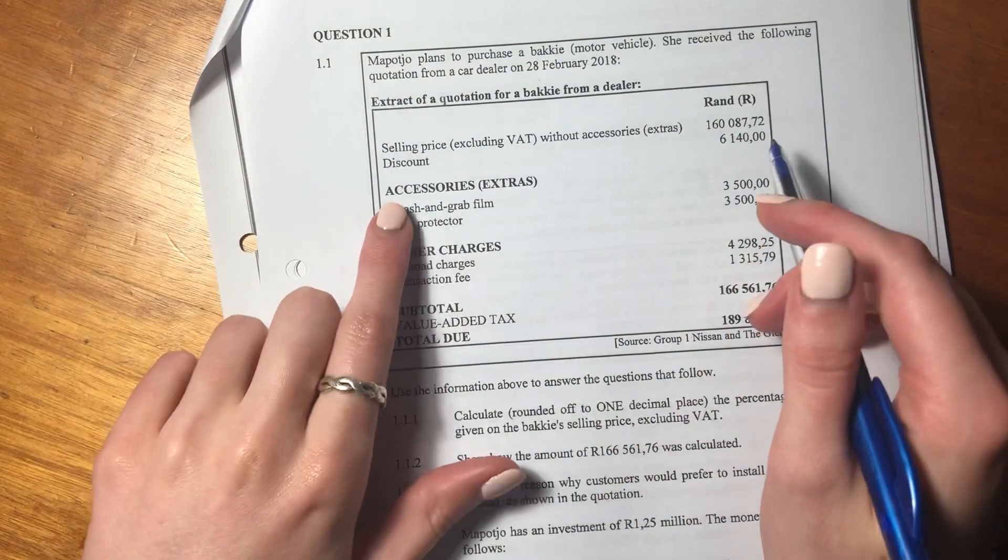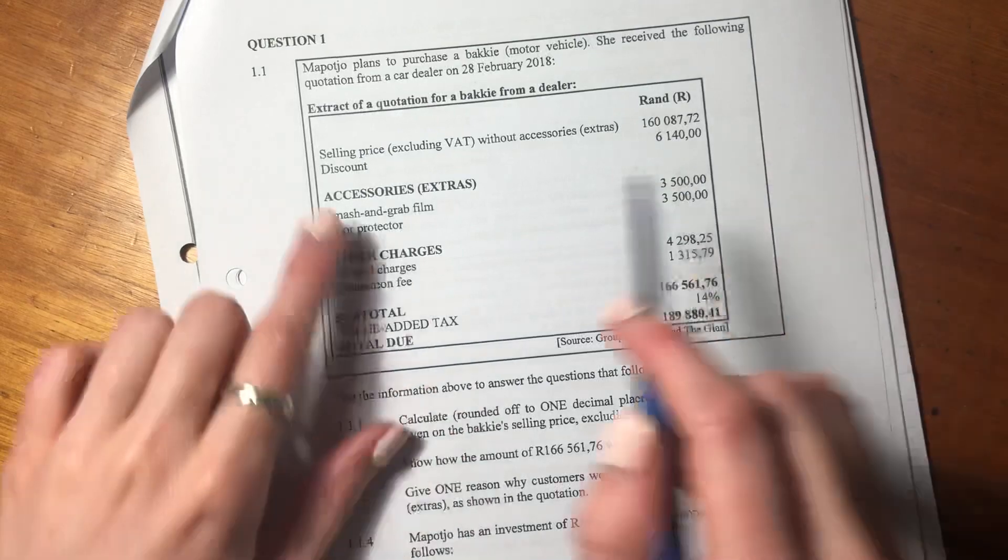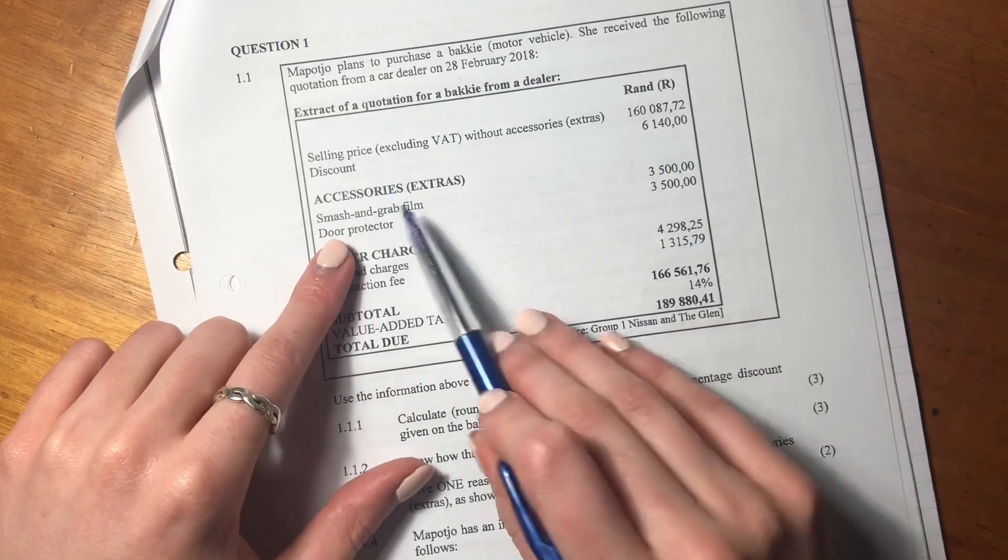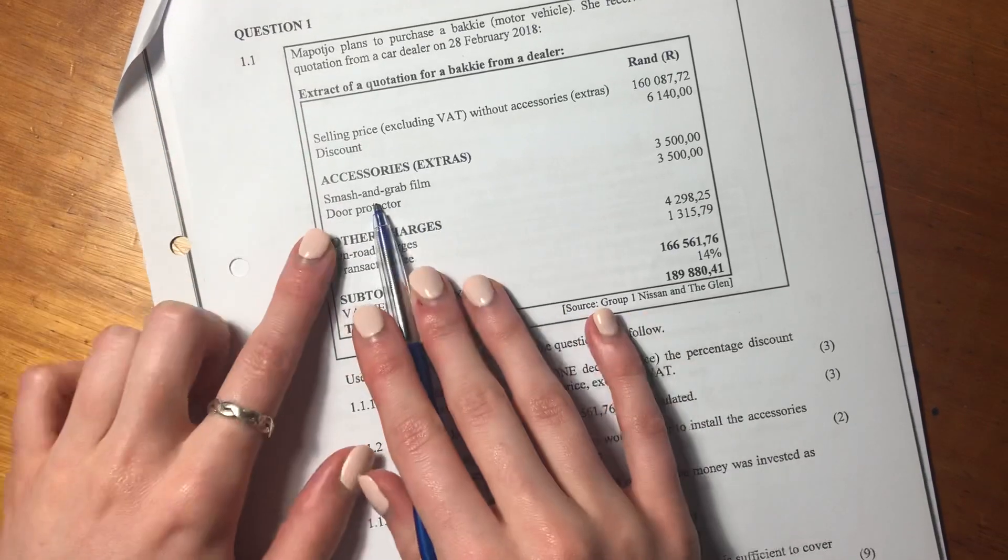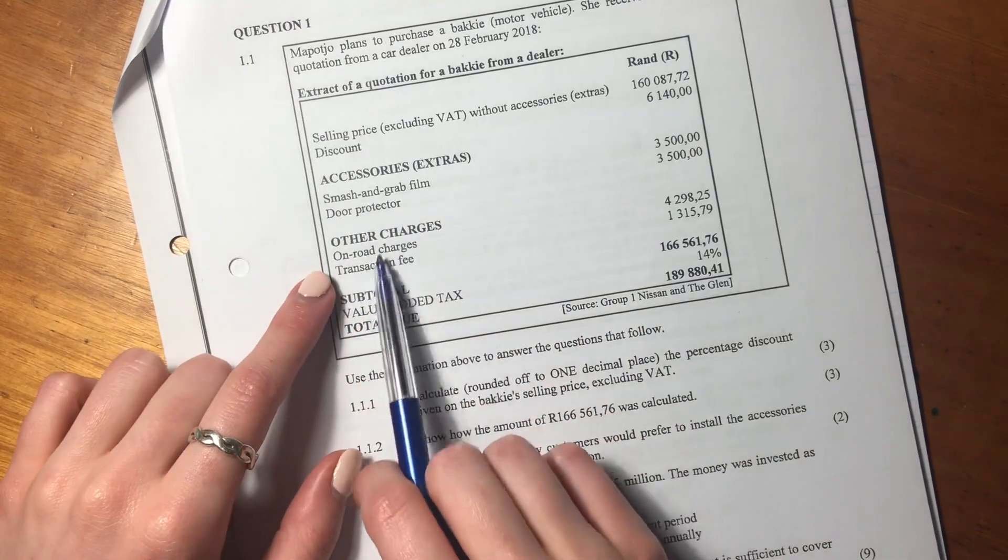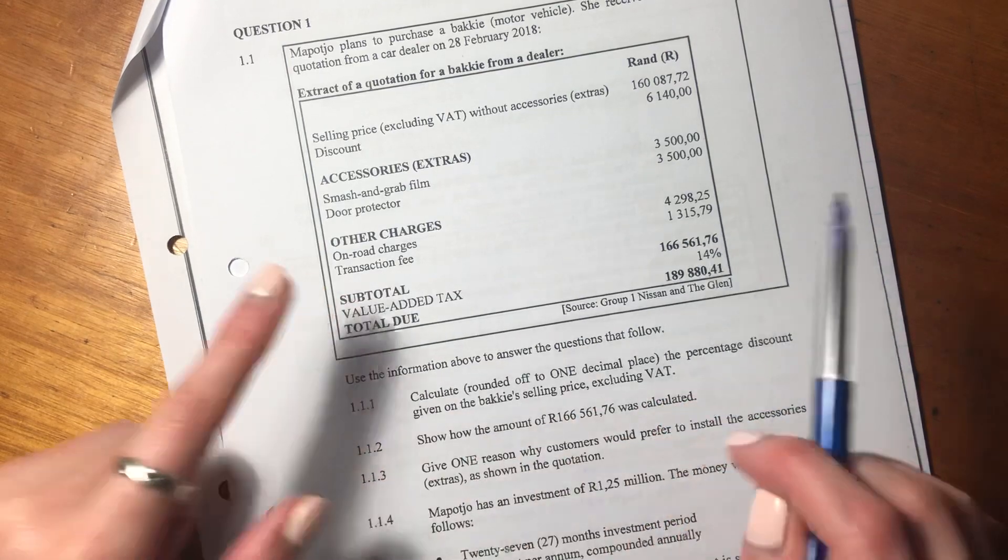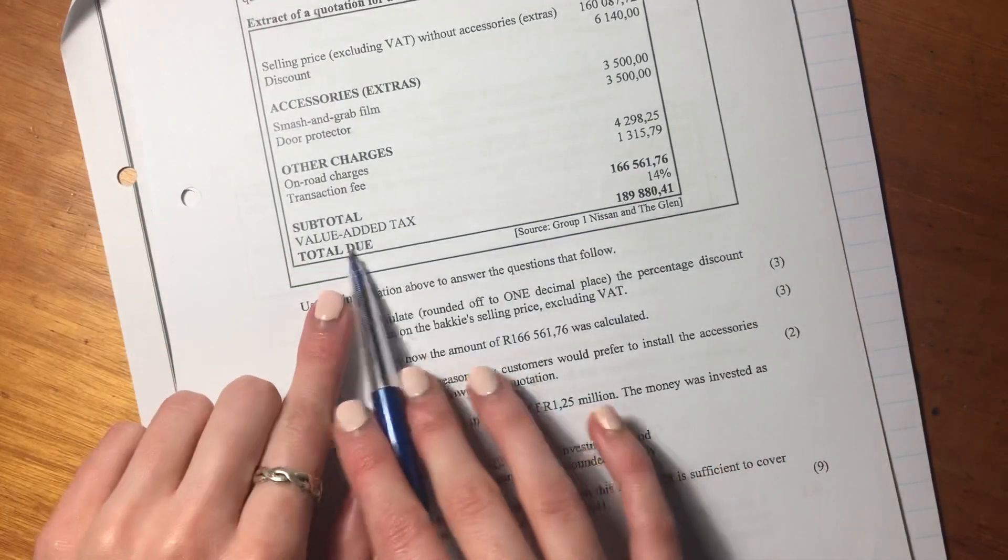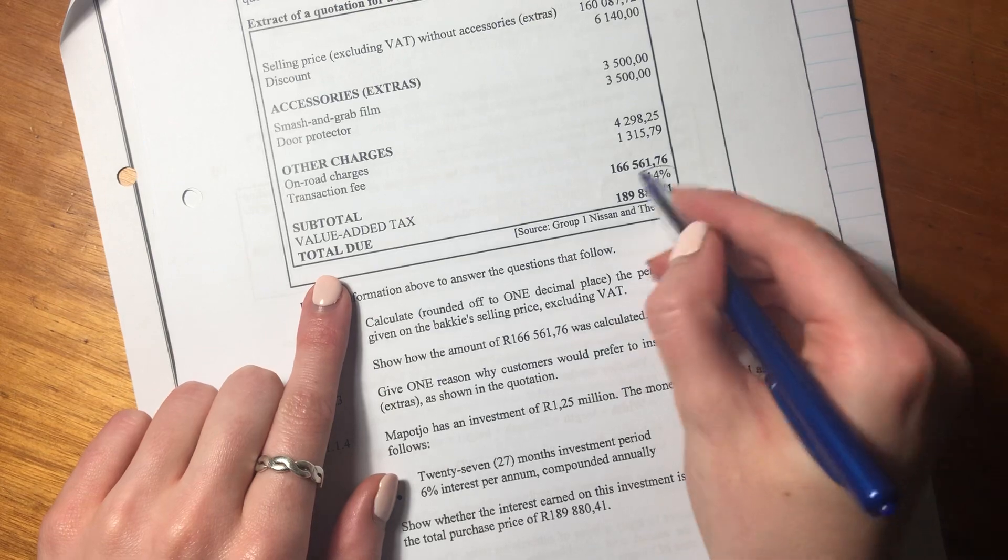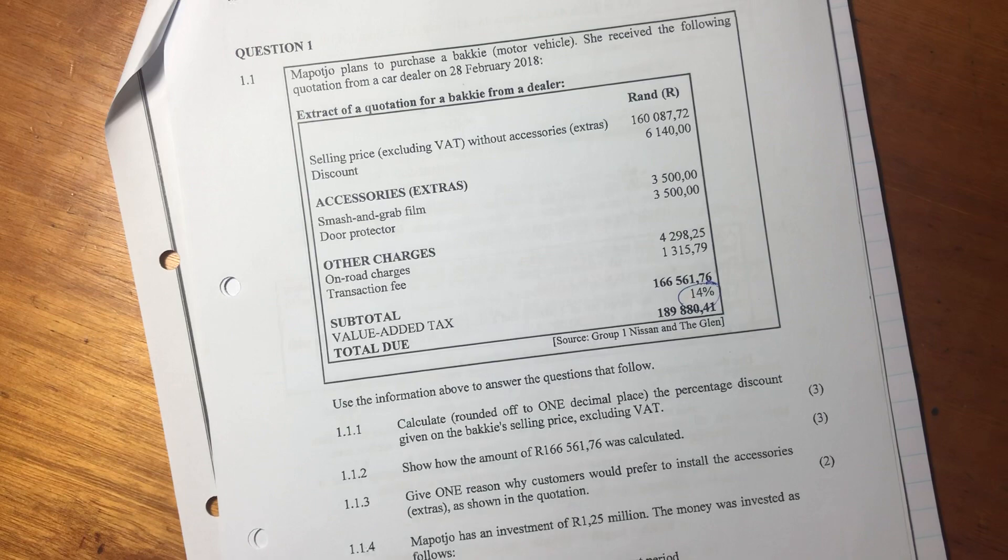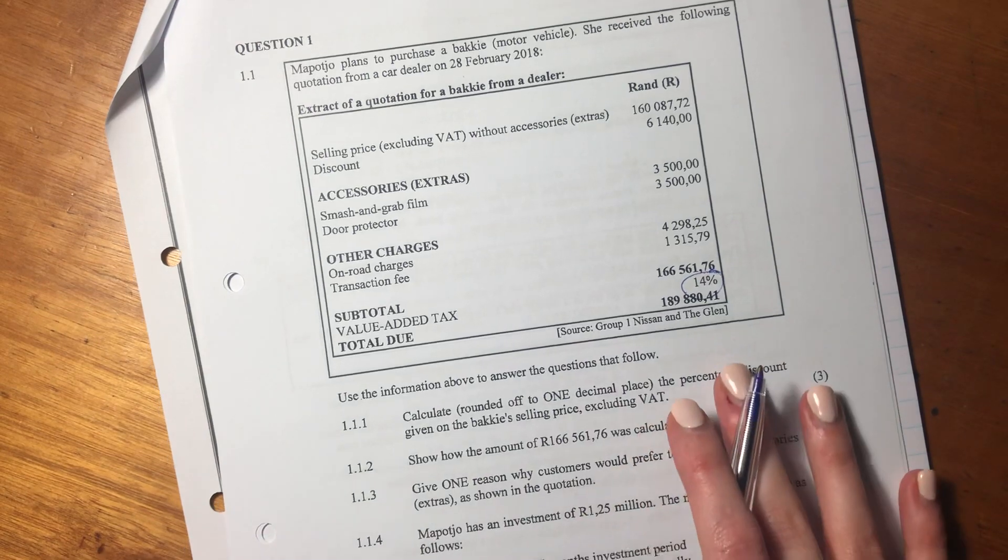So this is a little bit of extract from the quote. The selling price is this much, she gets this discount, and there's these extra accessories, a smash and grab, door protector, other charges like on-the-road charges, transaction fee, and then it gives a subtotal and the total due. So let's see what they want from us.